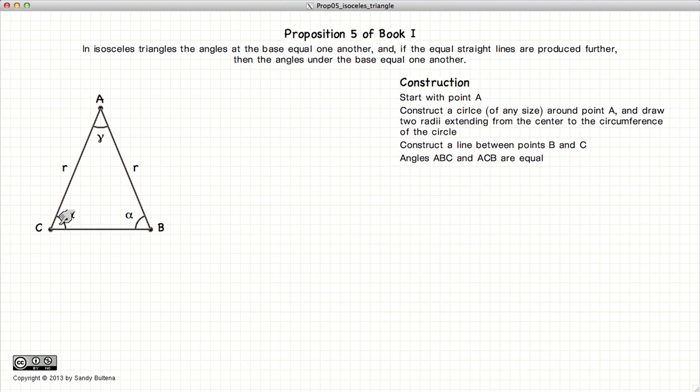The interior angles are equal. Now if we extend the line AC and the lines AB, the exterior angles are also equal. So how do we go about proving this?